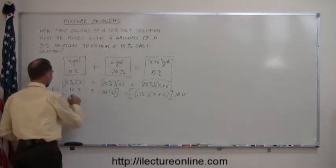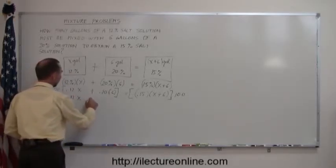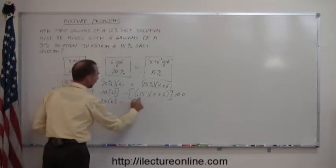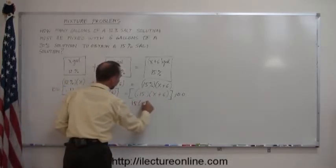So 100 times 0.12 is 12X, 100 times 0.20 is 20 times 6, and 100 times 0.15 is 15 times (X plus 6).